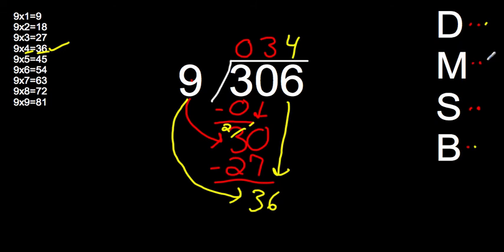Four times, well, I just divided, so I need to multiply. Four times 9 is 36. Now I've got to subtract. 36 minus 36 is zero. Bring down. There's nothing to bring down. There's nothing left over. No remainder. My answer is 34.